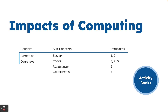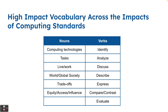There is a link on this page to the activity books. You should find a copy of this presentation in the notes section underneath the YouTube link so you can access those activity books. The high-impact vocabulary for impacts of computing includes computing technologies, world and global society, equity, access, and influence. The verbs build from the base level all the way up from identify to evaluate on Bloom's taxonomy.